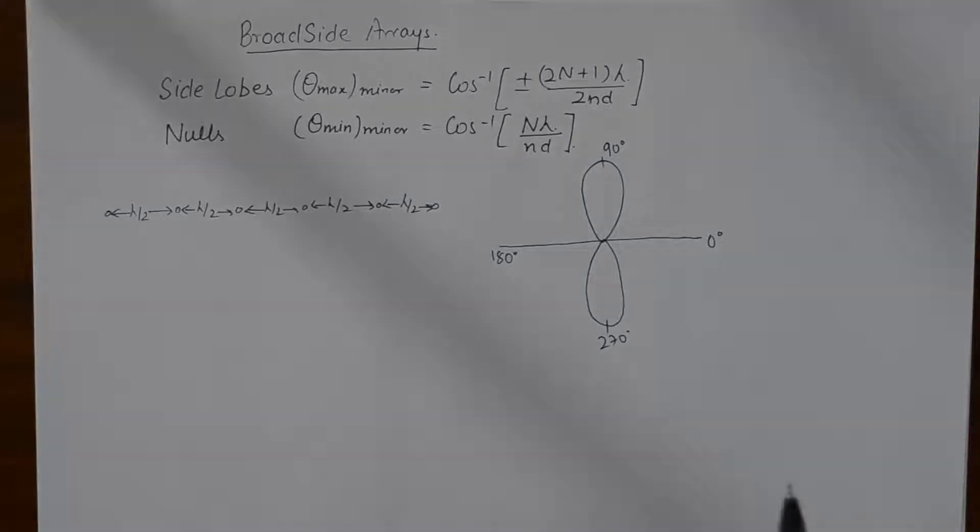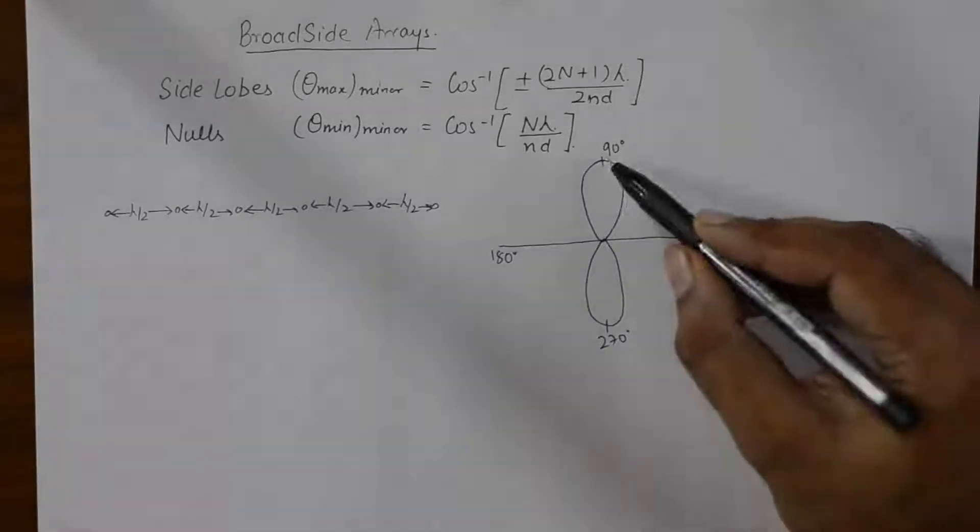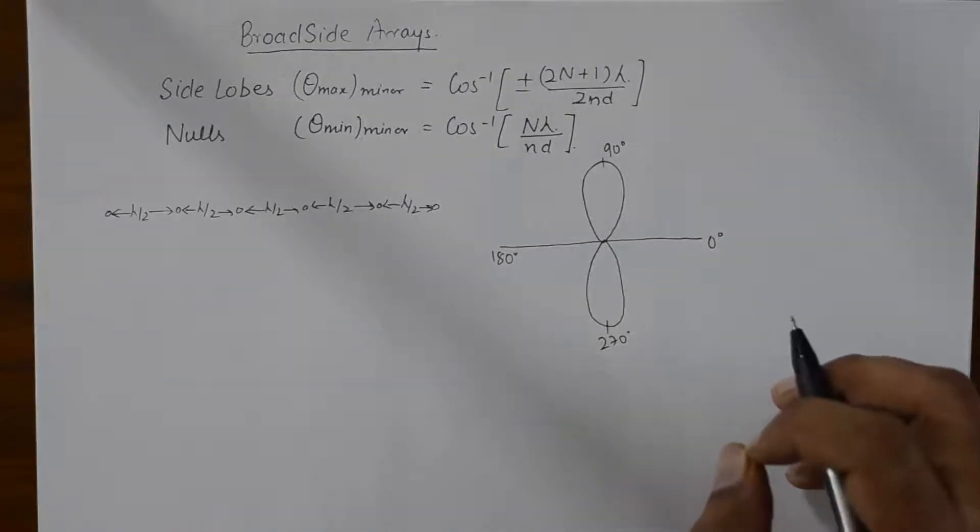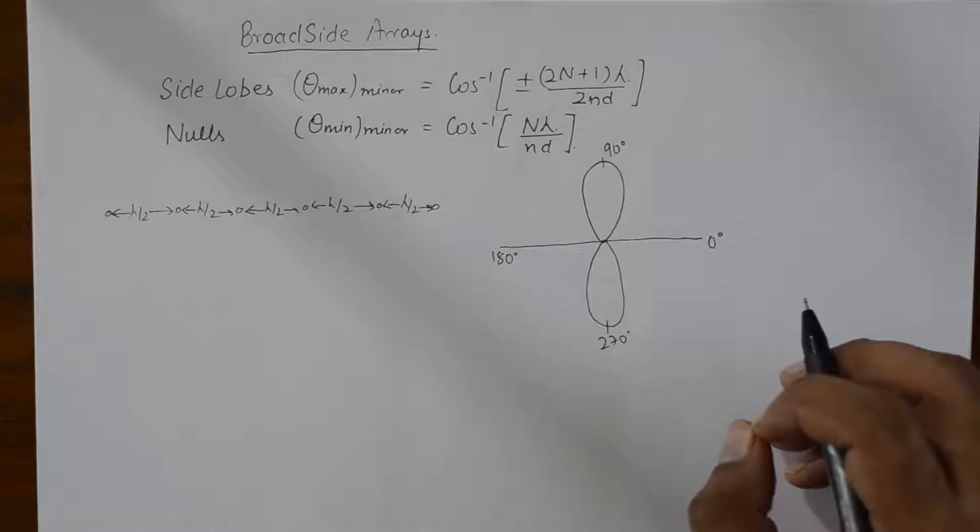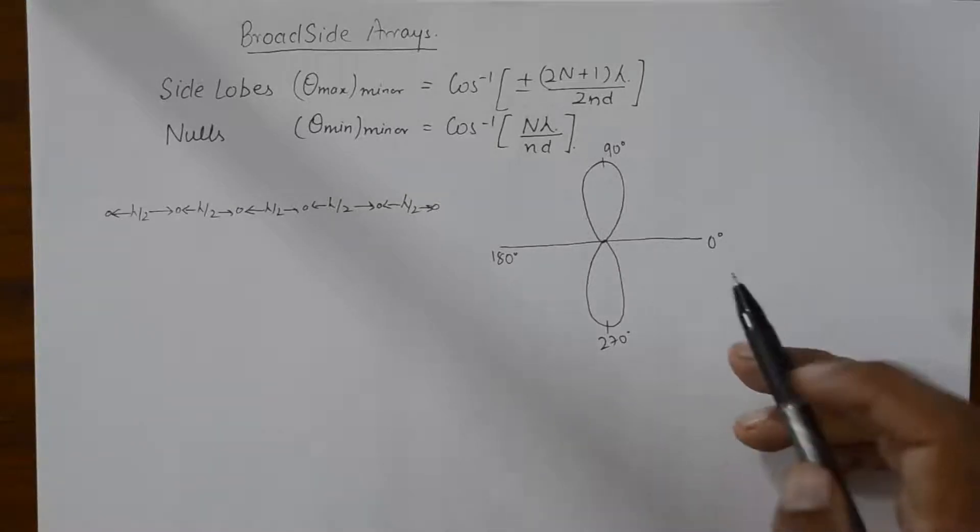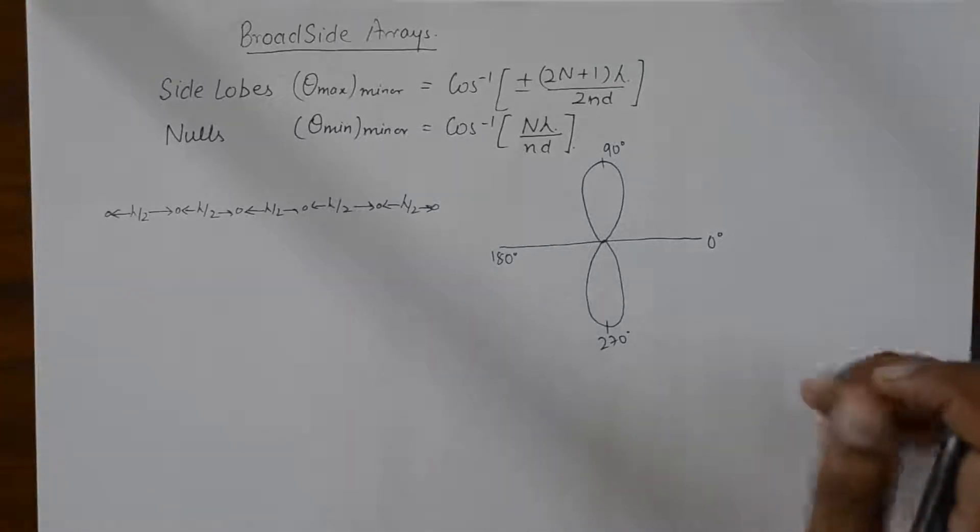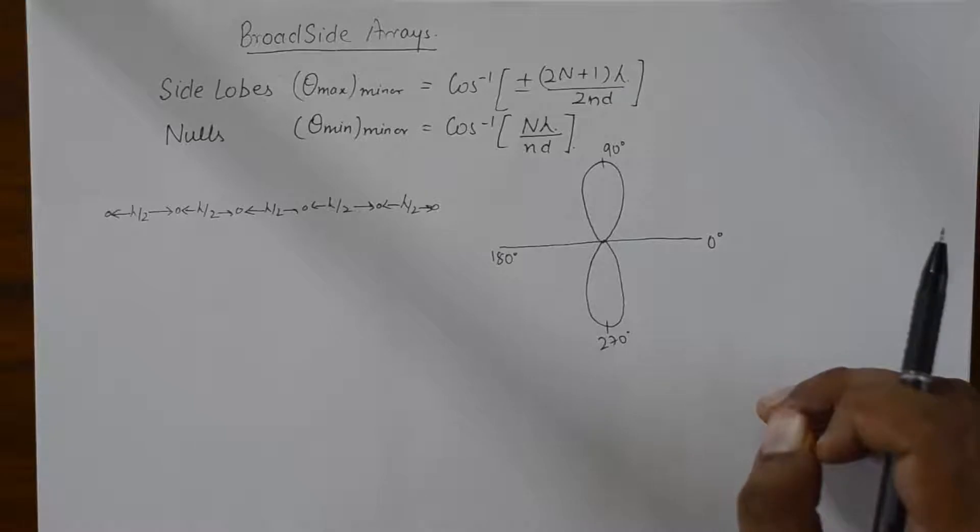When that happens, some stray energy will also be radiated apart from 90 and 270 degrees. Now, the angles at which that stray energy is radiated is known as the side lobes. And between all those side lobes there will be nulls.